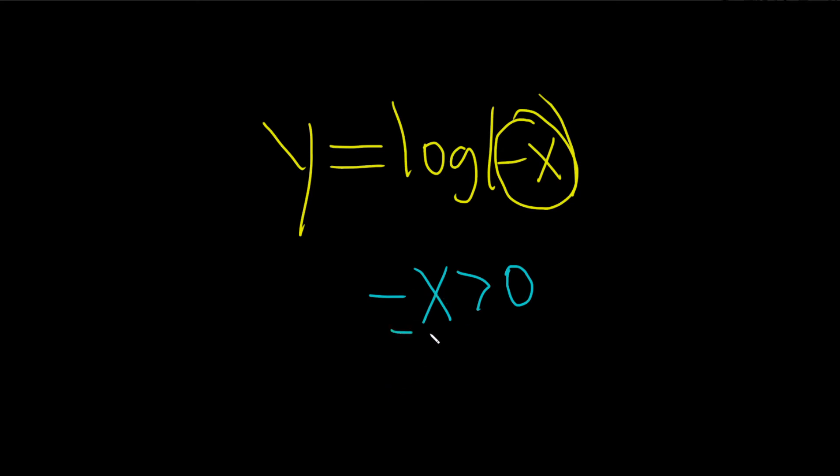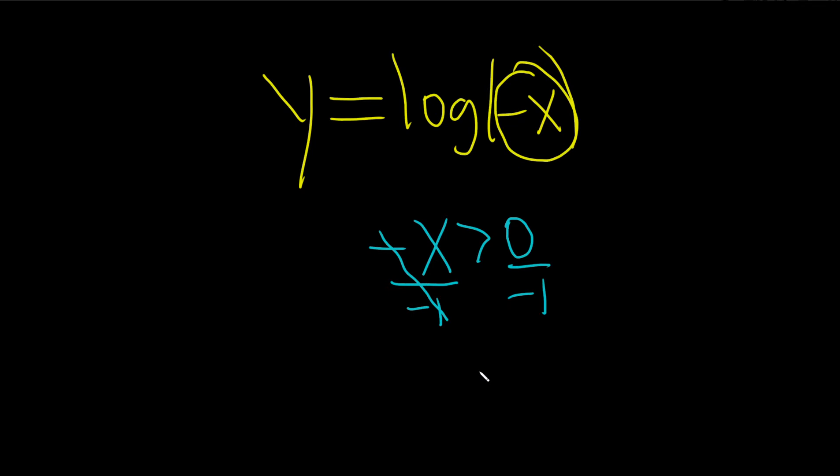In this case we can divide by negative one on both sides. But when you divide by negative, remember you have to switch the inequality. So this is x less than zero.